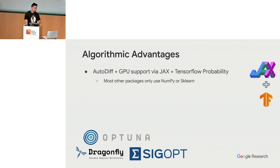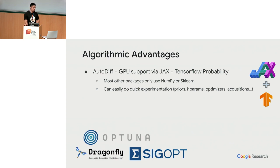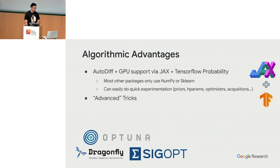Most other packages only use NumPy or scikit-learn. We want you to be able to quickly change our implementation to try new algorithms with modular components: you can change the priors, change the hyperparameters, and do it in a differentiable way. If you want to learn hyperpriors or more advanced output warping that's differentiable, you can. There are also advanced tricks in our GP that we welcome you to try — we want you to see how well they do with or without our current tricks.